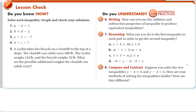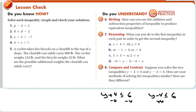Suppose you solve two inequalities: y plus 4 is less than or equal to 6, and y minus 4 is less than or equal to 6. How are the methods the same? We do the same thing to both sides no matter what — except in the first we subtract 4 and in the second we add 4. That concludes section 3-2, solving inequalities using addition or subtraction.